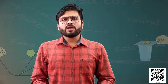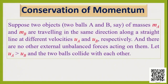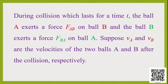Let's see how the law of conservation of momentum during a collision can be derived mathematically. Suppose we have two objects — object A with mass mA and object B with mass mB — both traveling in the same direction in a straight line, with initial velocities uA and uB respectively. We assume no external unbalanced force acts on them, and that the initial velocity of object A is greater than that of object B. The two balls collide with each other.